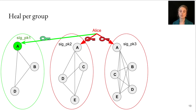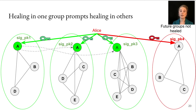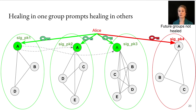A second option is that whenever Alice updates any signature key, she then updates all of them — healing in one group prompts healing in the others. There are two issues with this. First, it leads to information leakage, in that we now know something about the activity in one group simply based on her actions in the others. Second, and quite importantly, this does not heal future groups. So if Alice starts a new group with other participants, she is still going to be compromised in that group.